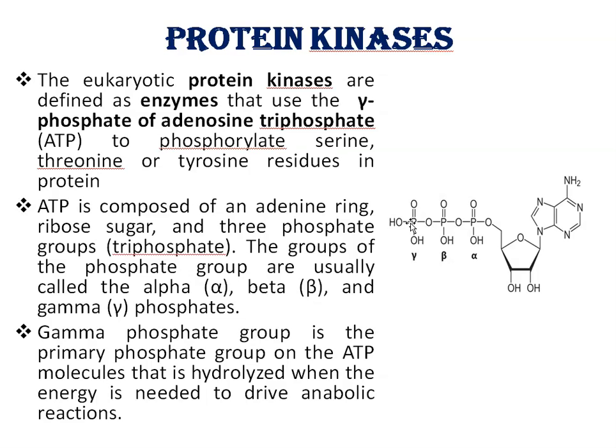When the first plant genome, Arabidopsis thaliana, was sequenced, a surprising number of protein kinases — over 1000 — were identified. The first plant protein kinase sequences were identified in pea and in rice through the use of degenerate primers.